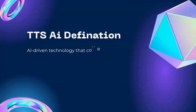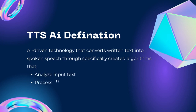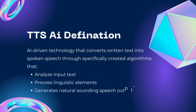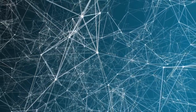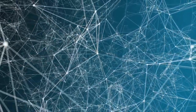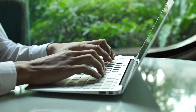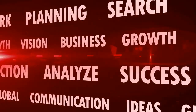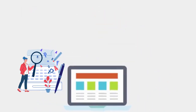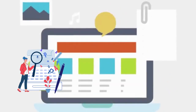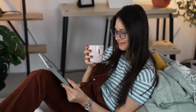So, what is a text-to-speech system? Text-to-speech TTS is an AI-driven technology that converts written text into spoken speech. These systems achieve this through sophisticated algorithms whereby the TTS systems analyze the input text, process linguistic elements, and generate natural-sounding speech output. The goal of TTS is to make information accessible audibly, bridging the gap between text-based content and human understanding.